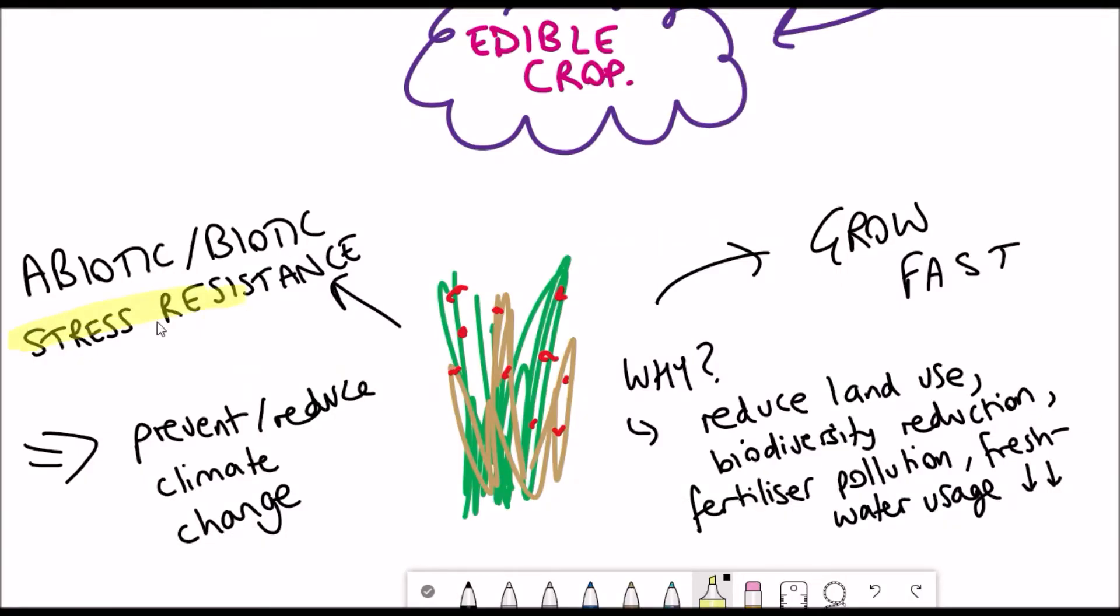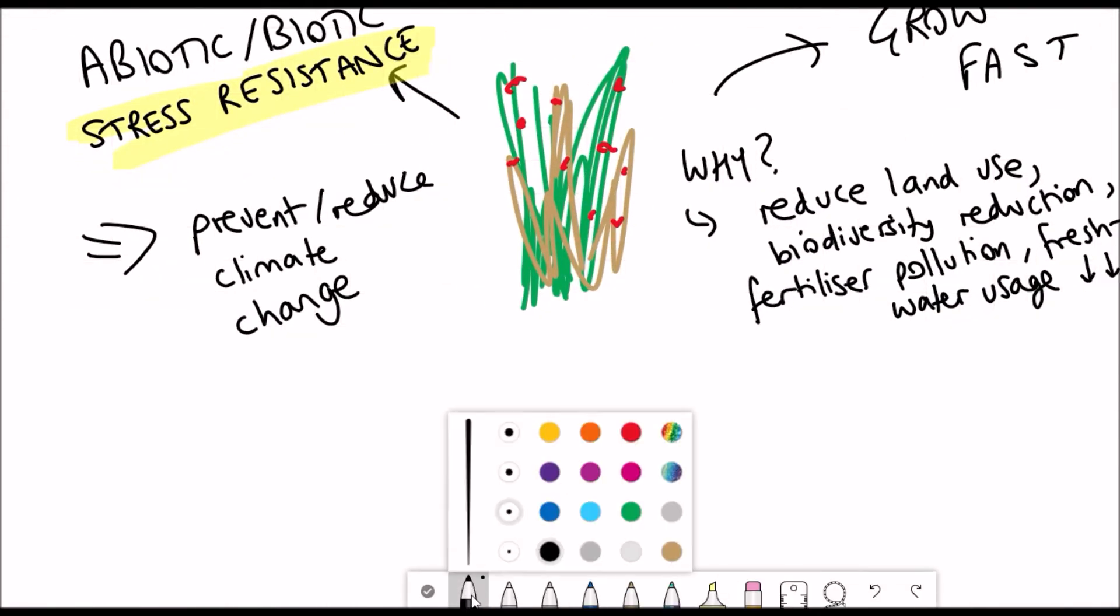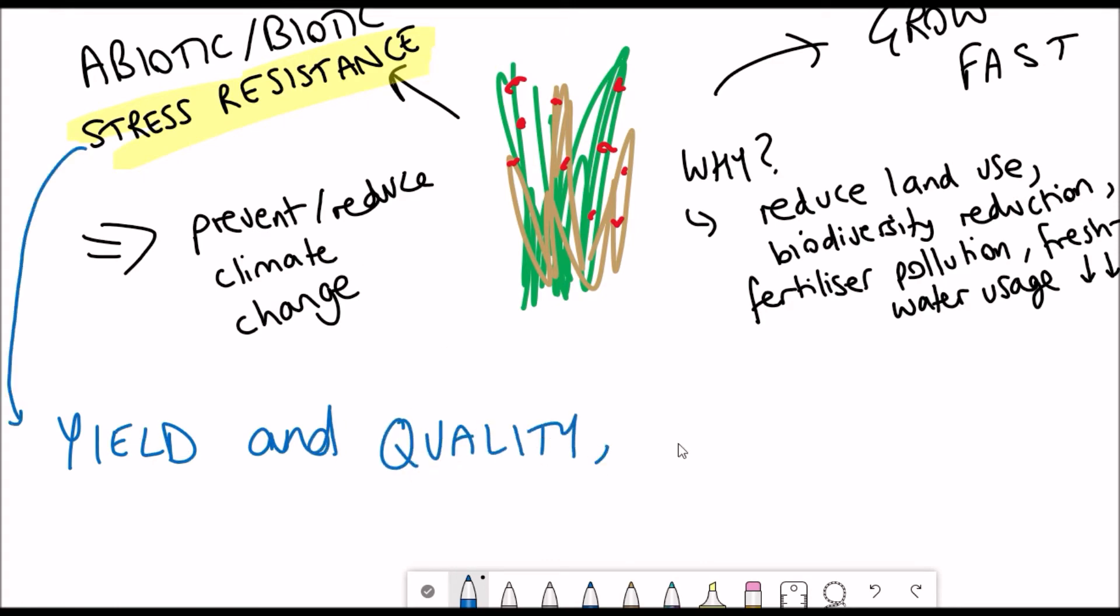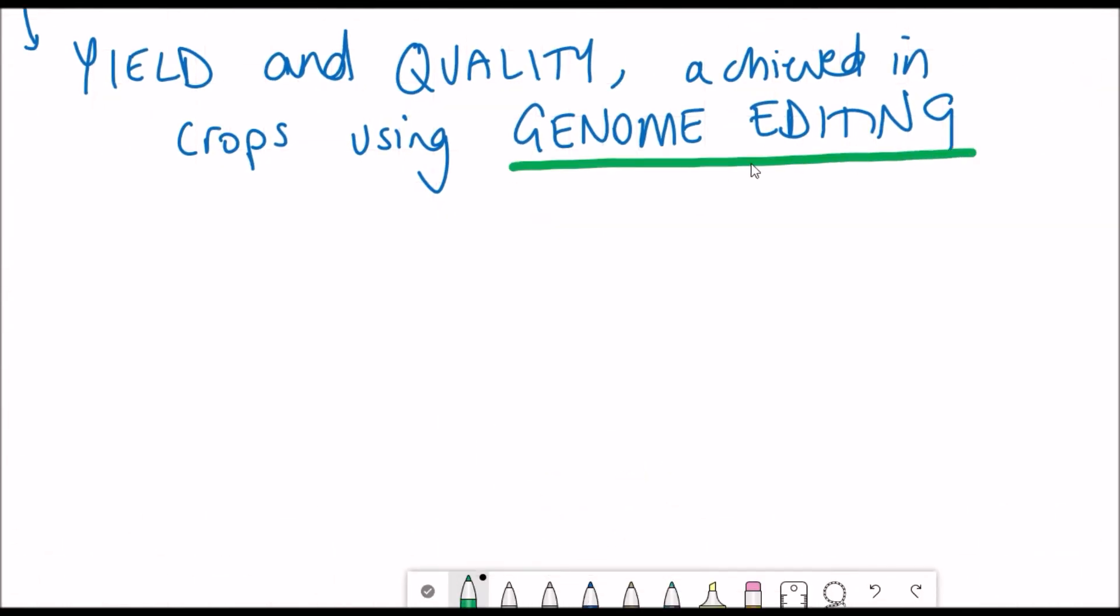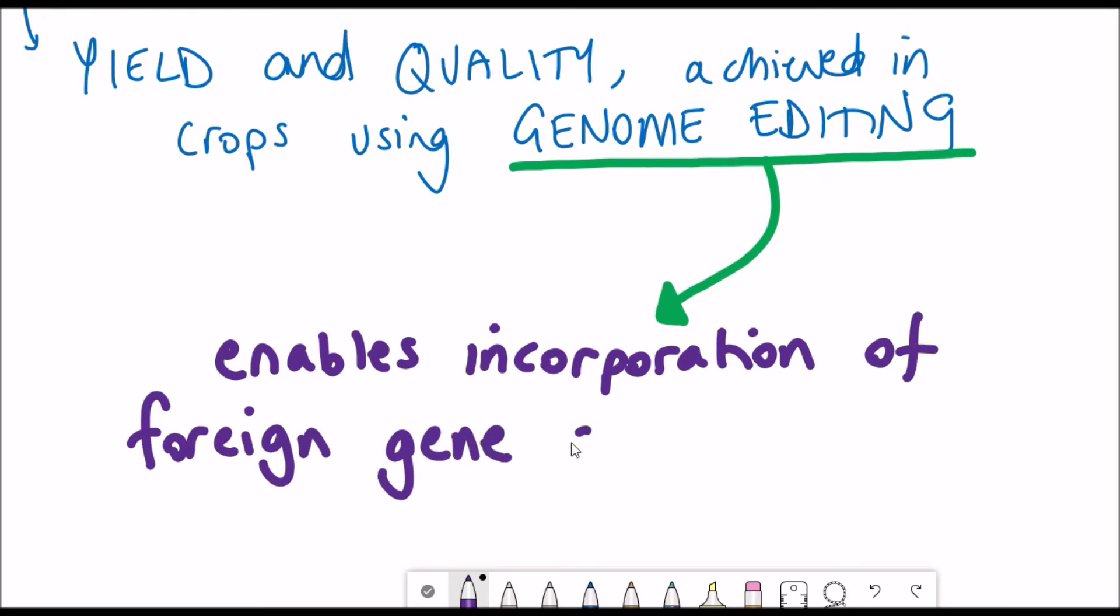How could this idea then be turned into a reality? Improvements in yield quality and stress resistance have already been achieved in crops using genome editing. This involves identifying genes contributing to these traits and mutating them accordingly. CRISPR-Cas gene editing systems have the potential to advance the pace of targeted modifications and incorporate foreign gene clusters